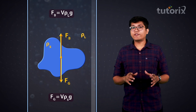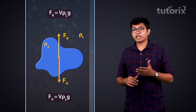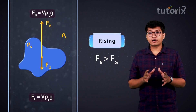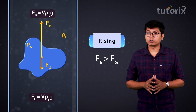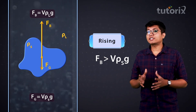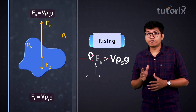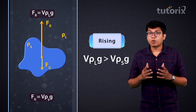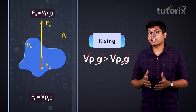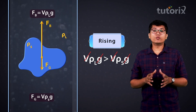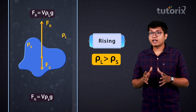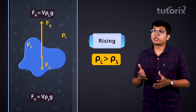In much the same way, if you want the object to rise up, you want the upward buoyant force to be greater than the downward gravitational force, which means V × ρS × g should be less than V × ρL × g. Once again, we can cancel out the common volumes and acceleration due to gravity, and you would get ρS less than ρL for the object to actually rise up.